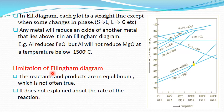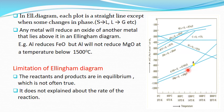We are coming to the last section of the Ellingham diagram. Two important points: in the diagram we can see mostly straight lines, but somewhere there are slight changes in slope. This change in slope is due to phase transitions — the solid form of a compound changes to liquid, and liquid changes to gas. That change can be observed in the delta G value.